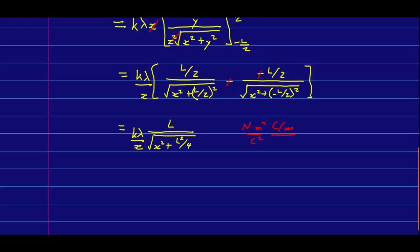And then we have a length, which is in meters, over a square root of a bunch of lengths squared. So, those are meters over meters, and those cancel, and I'm not going to worry about them.